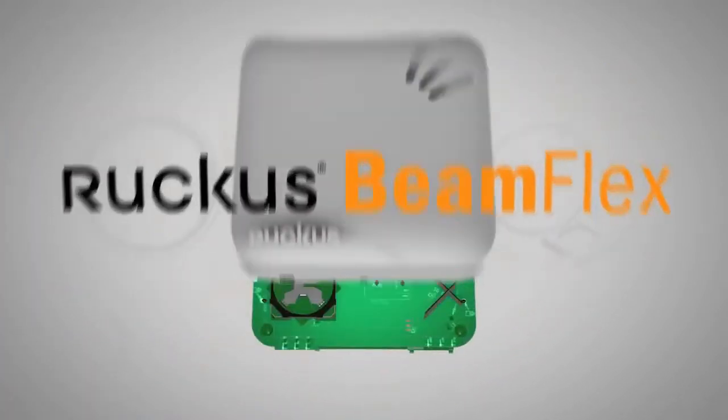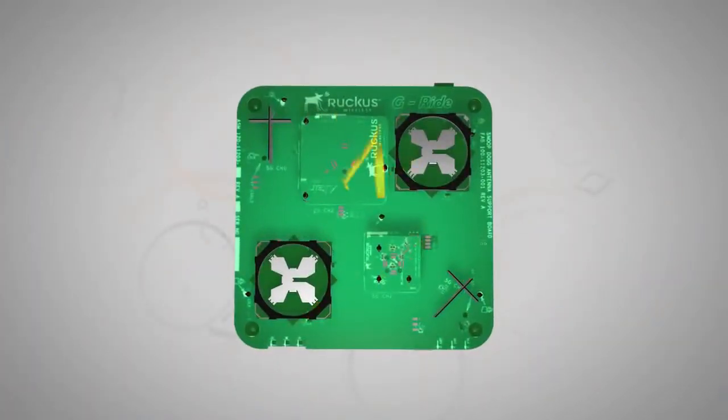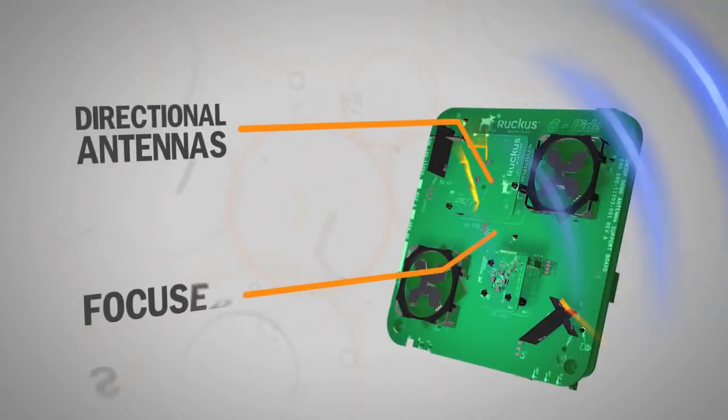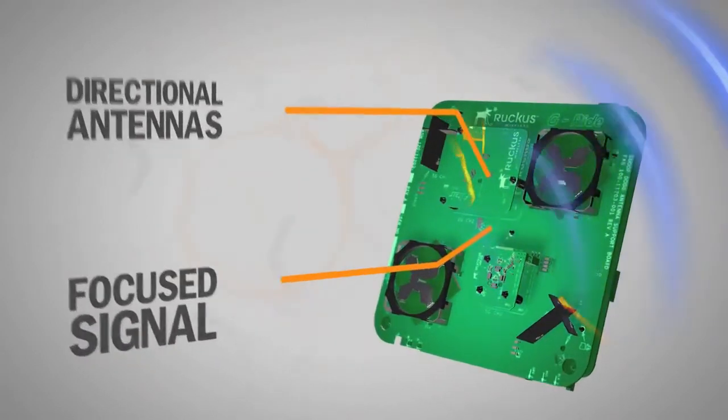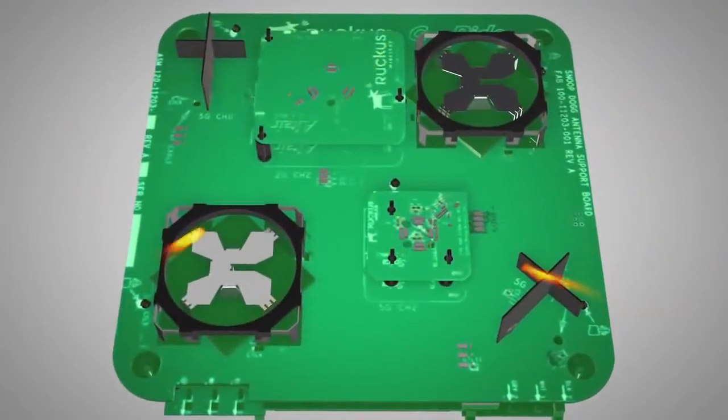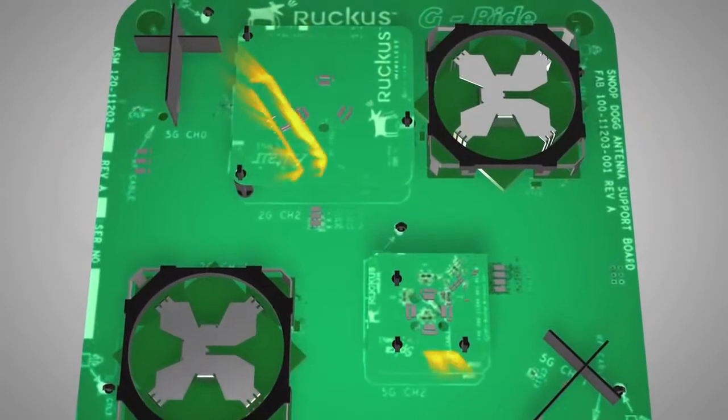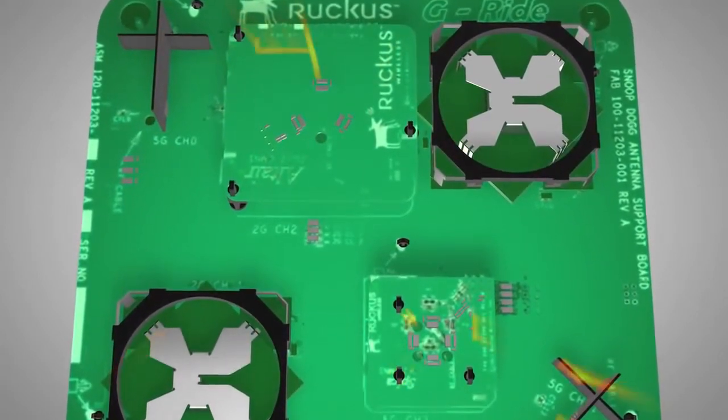Here's how it works. Through patented technology, BeamFlex automatically creates a directional Wi-Fi signal on the fly for every client. It does this by activating combinations of individual antenna elements, each working in concert to create the best possible signal path that yields the highest data rate.